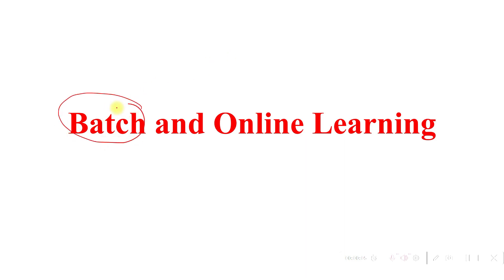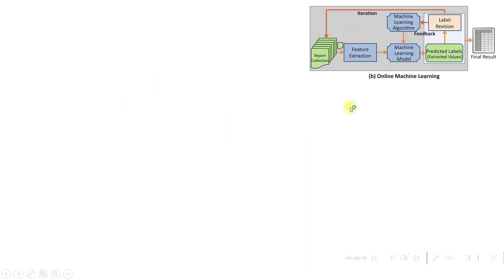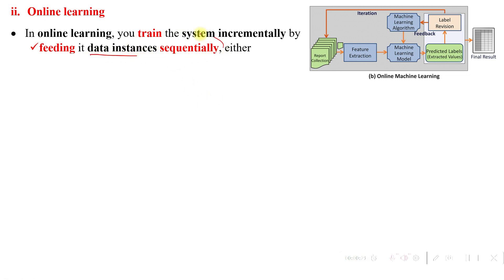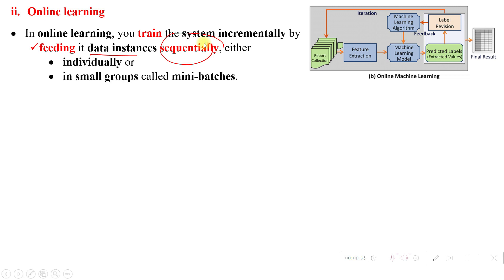Welcome to the channel. In the previous video we discussed batch learning. In this video we are going to see what online learning is. Online learning is a system in which we train the system incrementally by feeding data instances sequentially, either individually or in small groups called mini-batches.